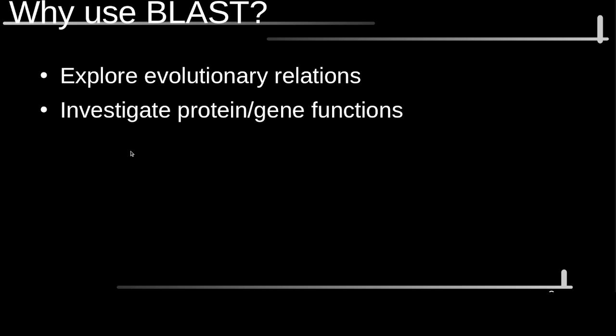We use BLAST to explore evolutionary relations between organisms. If I found a new species, sequenced its DNA, and wanted to see what other species it's related to, BLAST would be a great way to do that — I could query the DNA against a database of known mammals or reptiles. We can also investigate the function of genes and proteins: if I have a string of amino acids and want to know what it does, comparing it to a database of proteins involved in photosynthesis or digestion might give hints about my protein's function.